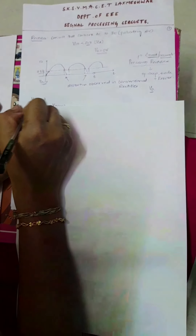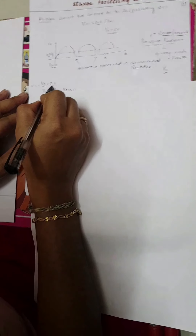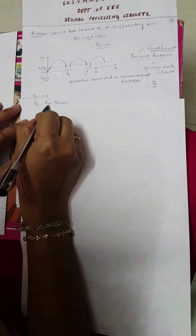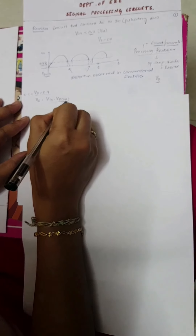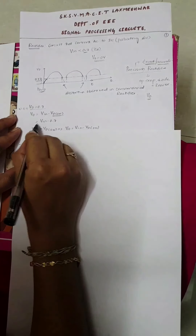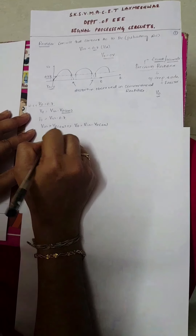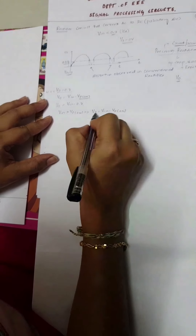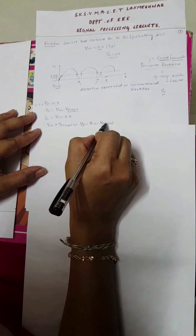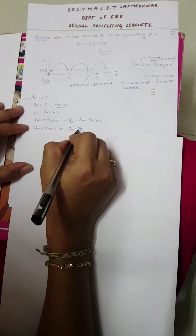The voltage drop of the diode is 0.7V. The output voltage equation is V naught = Vin − Vd(on). Substituting 0.7V, the equation becomes V naught = Vin − 0.7. Whenever Vin is greater than Vd, there is no problem with the conventional rectifier and you get some output. But if Vin is less than Vd(on), the output equals 0. This is the limitation of conventional rectifiers, which is overcome by the precision rectifier.